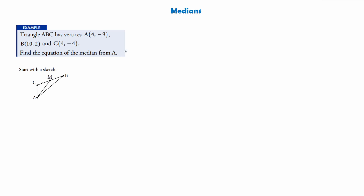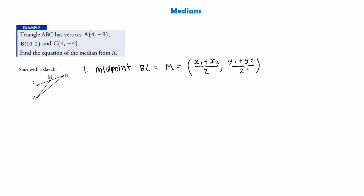There are three steps for working out the equation of a median. Step one is to calculate the midpoint of the relevant line. We use our midpoint formula: the midpoint of BC, which we call M, equals (x₁ + x₂)/2 and (y₁ + y₂)/2. Using B and C, that's (10 + 4)/2 and (2 + (−4))/2, giving us 14/2 = 7 and −2/2 = −1. So M is (7, −1).